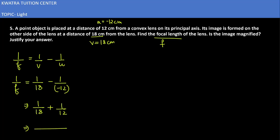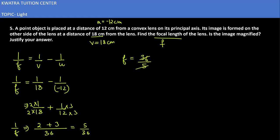The LCM of 18 and 12 is 36. Multiplying the first term by 2 gives 2, and multiplying the second term by 3 gives 3. So 2 plus 3 equals 5, meaning 1 over f equals 5 over 36. Therefore f equals 36 by 5, which gives us 7.2 cm.